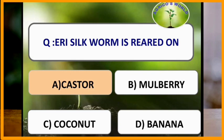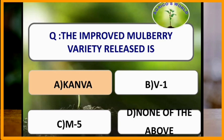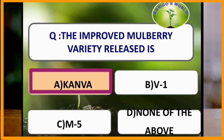Eri silkworm is reared on castor. The improved mulberry variety released is Kanva — Kanva is the improved variety of mulberry.